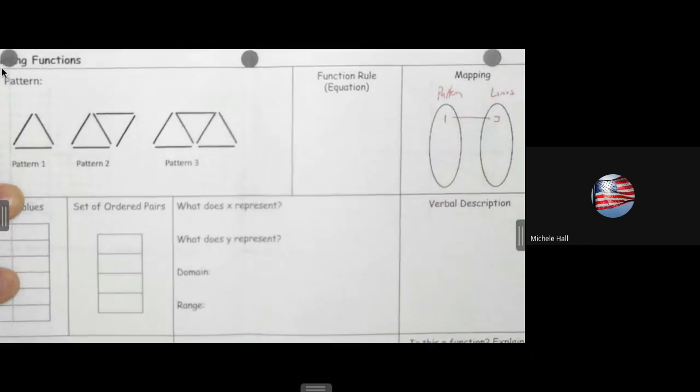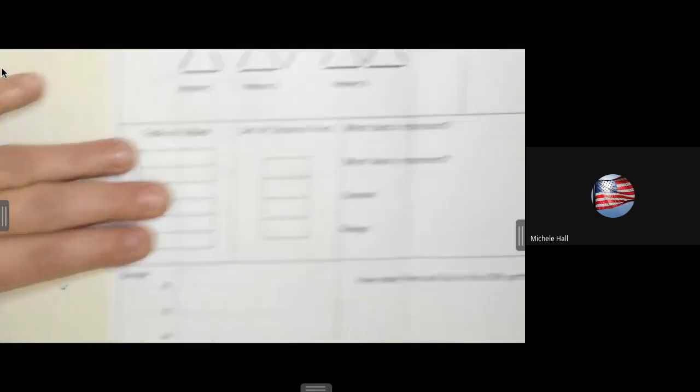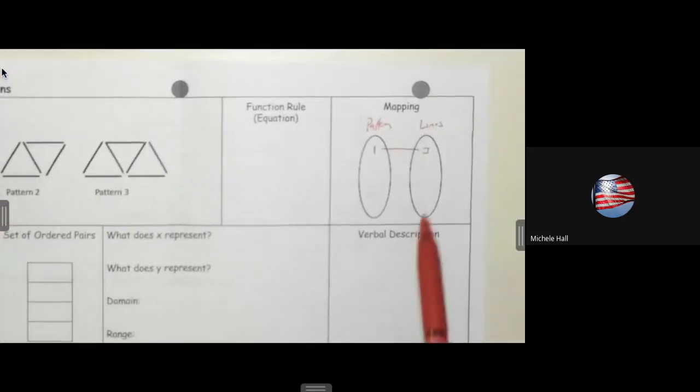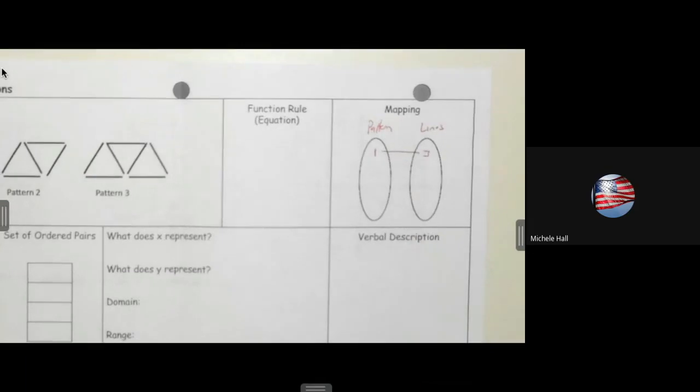Pattern one has three lines and then you're just mapping it to it. That's what mapping means. It's the exact same thing as having a table of values except it's a different way to look at those ordered pairs.